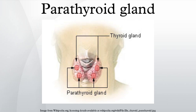Function: The major function of the parathyroid glands is to maintain the body's calcium and phosphate levels within a very narrow range, so that the nervous and muscular systems can function properly. The parathyroid glands do this by secreting parathyroid hormone — a small protein that takes part in the control of calcium and phosphate homeostasis, as well as bone physiology. Parathyroid hormone has effects antagonistic to those of calcitonin.